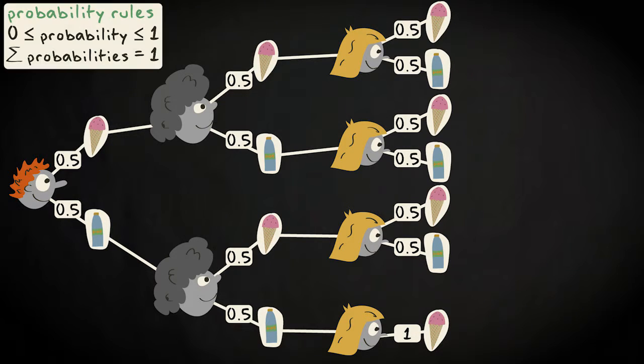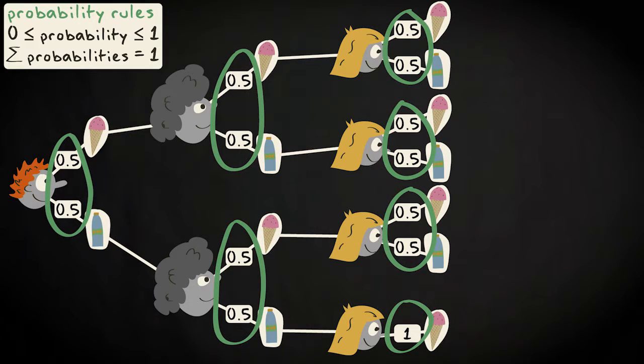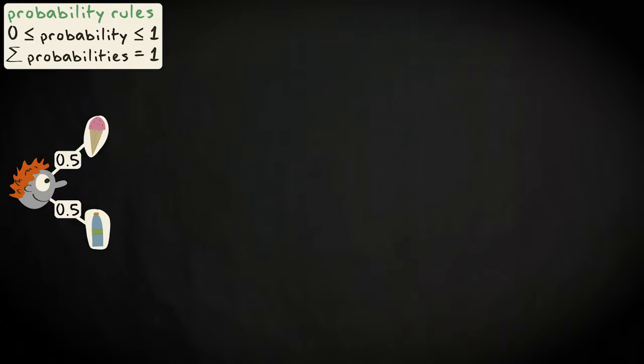The general probability rules apply to every node in the tree diagram. For instance, if you consider this tree diagram at the first customer, there are two branches, each with probability 0.5 summing to 1.